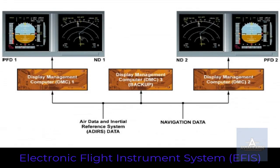EFES. For the EFES displays, data from the Air Data and Inertial Reference System, ADIRS, plus navigation data from the Flight Management and Guidance System, FMGS, is fed directly to the DMCs. The DMCs then process the data and generate the images to display. Under normal circumstances, DMC1 supplies the Captain EFES displays, DMC2 supplies the First Officer EFES displays, and DMC3 is available as a backup.